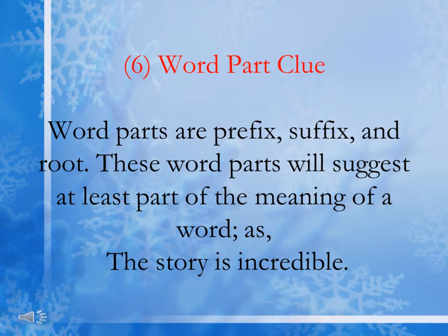The last clue to understand word context is the word part clue. Word parts are prefix, suffix, and the root. These word parts suggest at least part of the meaning of a word. For example: 'The story is incredible.' We divide the word into parts — 'in' plus 'credible.' If we know the meaning of 'credible,' we can assume the meaning of 'incredible.' By this way, we can understand the context properly.